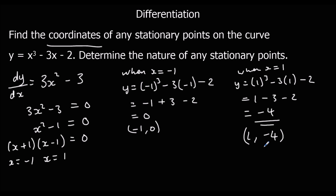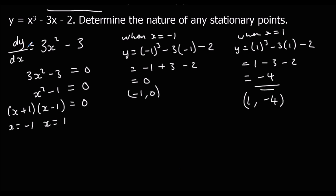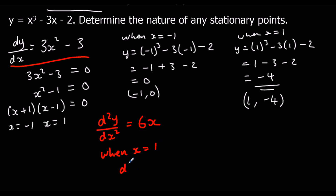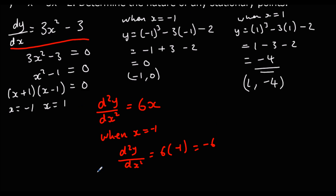Now we need to determine the nature of the stationary points, so we find the gradient of the gradient. From dy/dx = 3x² − 3, differentiating gives d²y/dx² = 6x. When x is minus 1: the gradient of the gradient is 6(−1) = −6, which is negative — therefore it is a maximum. So (−1, 0) is a maximum.